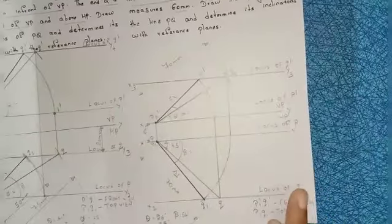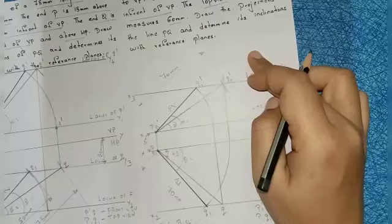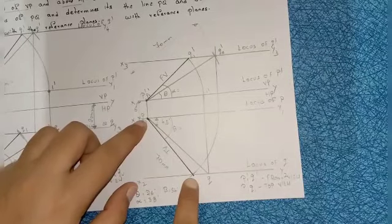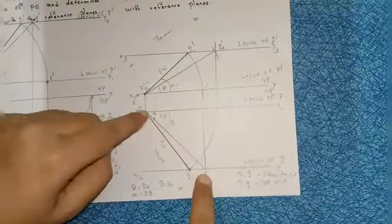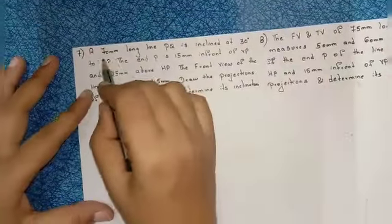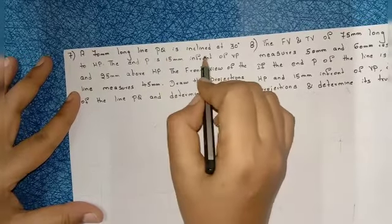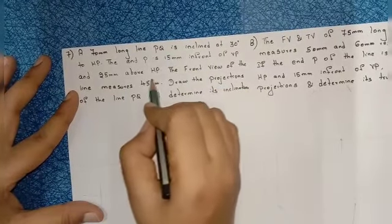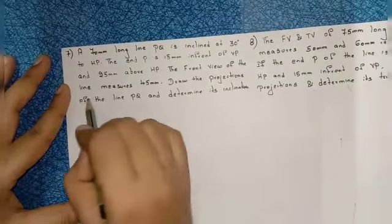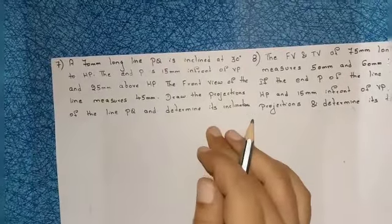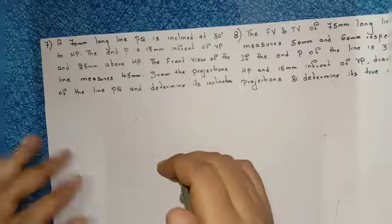Always above the reference line we are constructing the front view, below the reference line we are constructing the top view. With the help of this top view, we construct the front view. Now let us see problem seven: a 70mm long line PQ is inclined at 30 degrees to HP. End P is 15mm in front of VP and 25mm above HP. The front view of the line measures 45mm. Draw the projections and determine its inclinations. In the previous problem they mentioned the top view; in this problem they mention the front view.